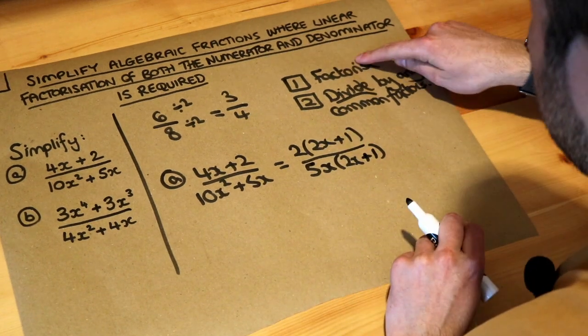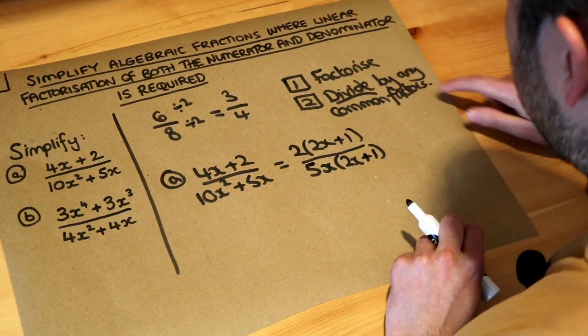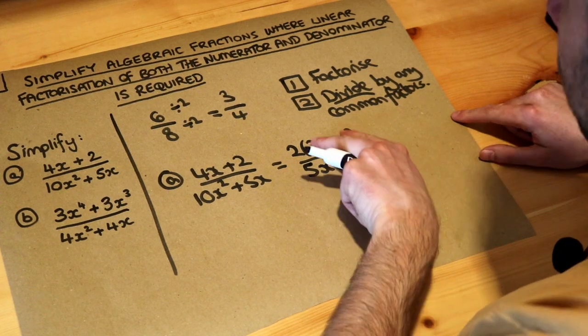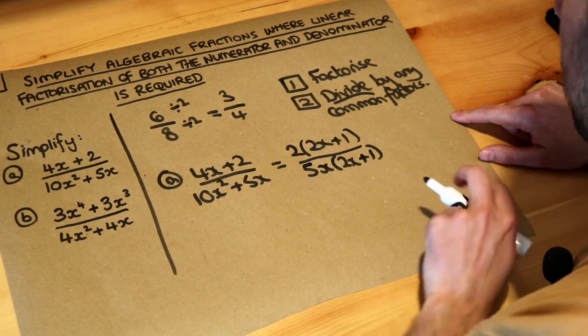So we've done the first step - we factorized - and the second step is to divide by any common factors. Can you see you've got 2x+1 common to the top and the bottom?